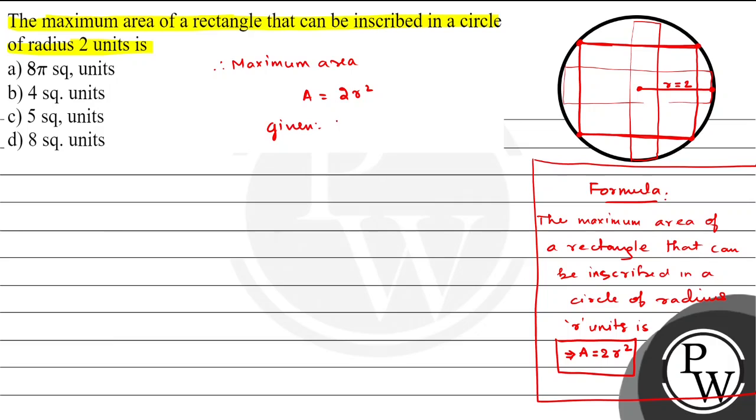Given r = 2 units, therefore area A equals 2r². For a circle, the area is πr², but for a rectangle inscribed in the circle, it should be 2 times r². Simple logic.